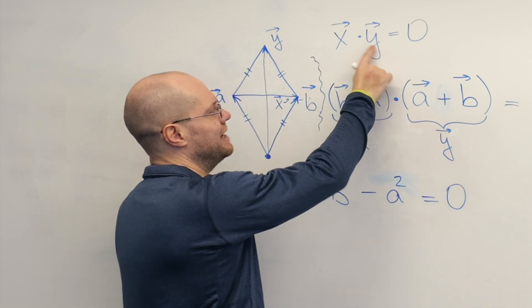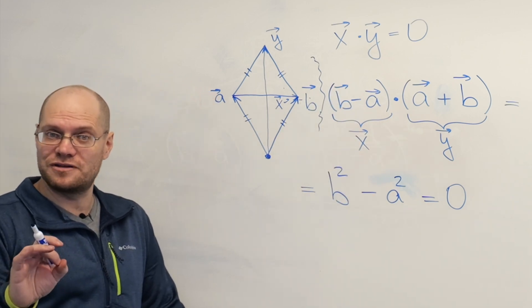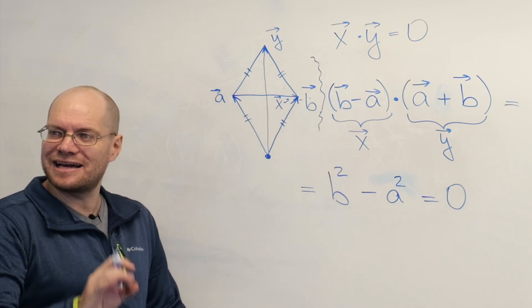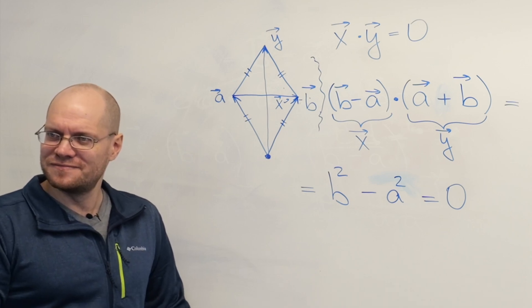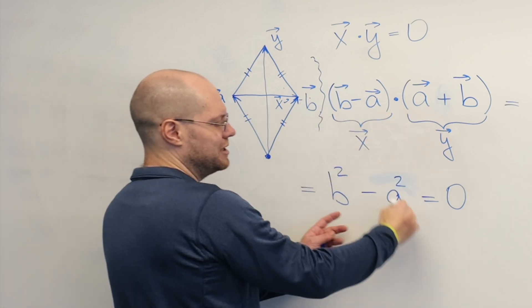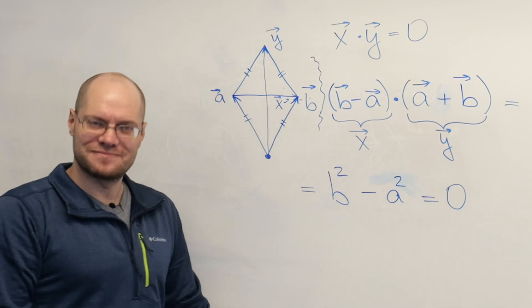We wanted to prove that x dotted with y. The product, the dot product of the vectors representing the diagonals is zero. Right? And there we proved it. We just wrote it out and got zero.